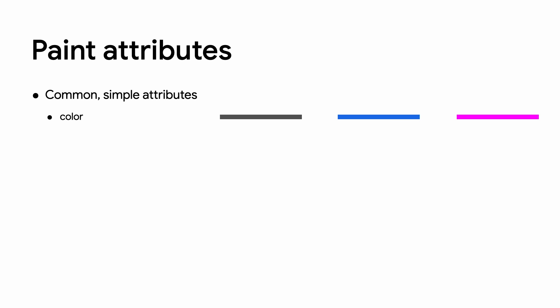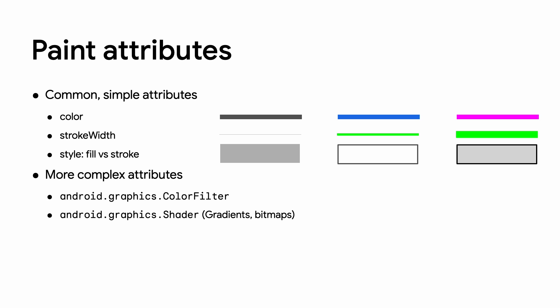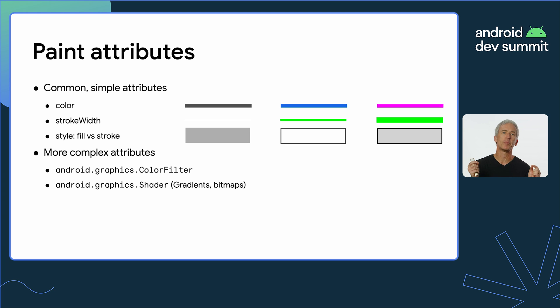There are simple attributes like what color to draw the line, or how wide that line is going to be, or whether to fill a rectangle versus draw an outline versus both. There are also more complex and interesting effects like color filter, which changes the color of each pixel as it goes through the rendering system, or shader, which gives you things like linear or radial gradients or bitmaps. Each of these operations is going to be very manual — you set one of these attributes on the paint object, and then in a custom view you call one of these canvas commands to draw a line with the paint that holds this information.